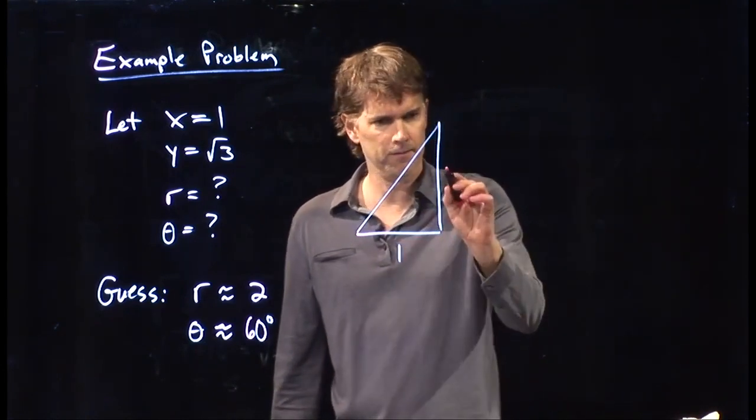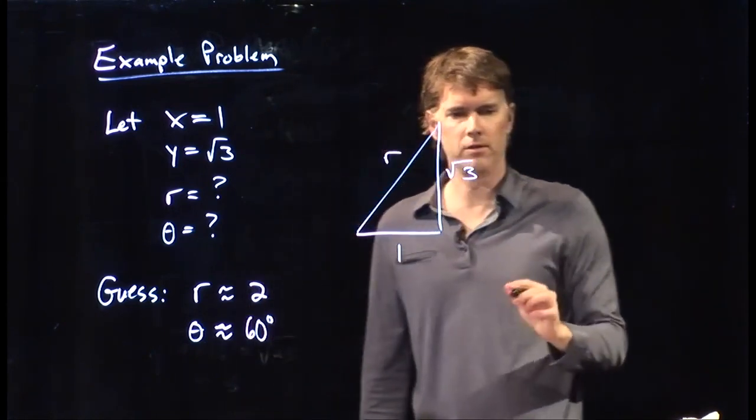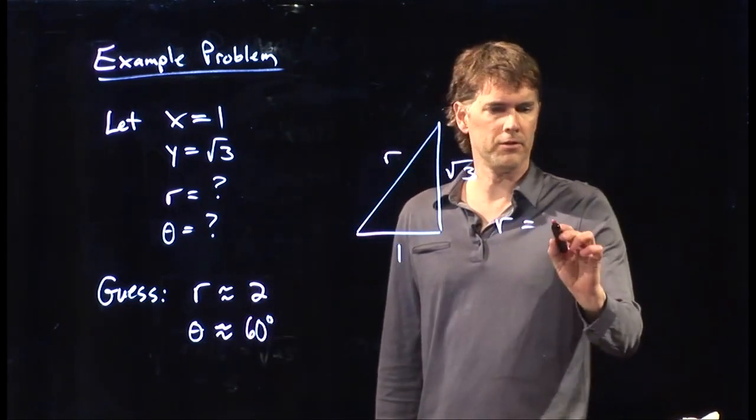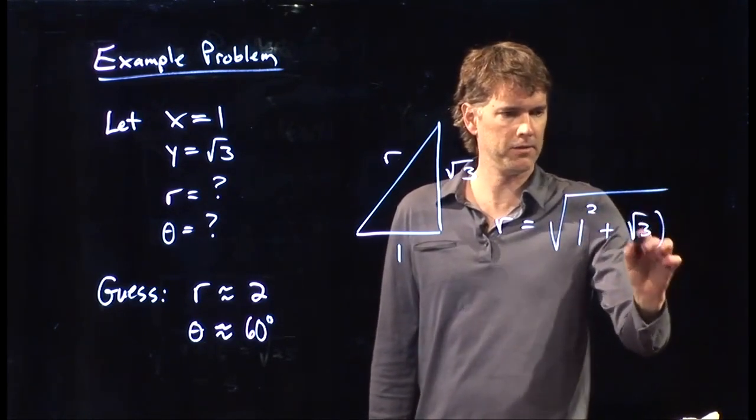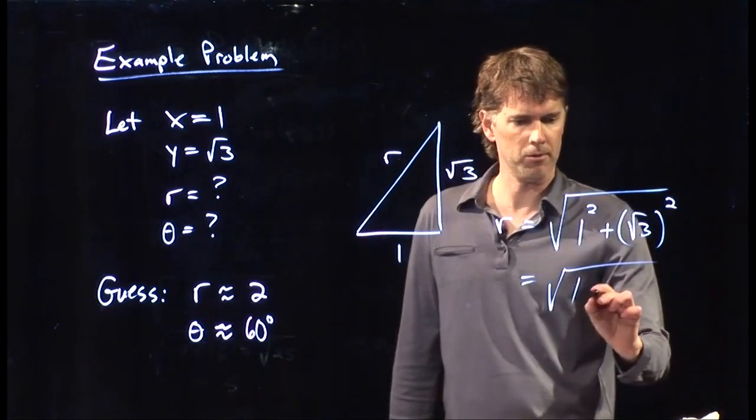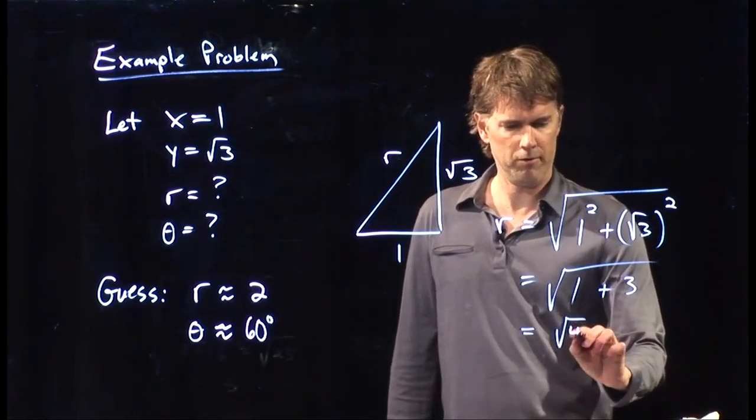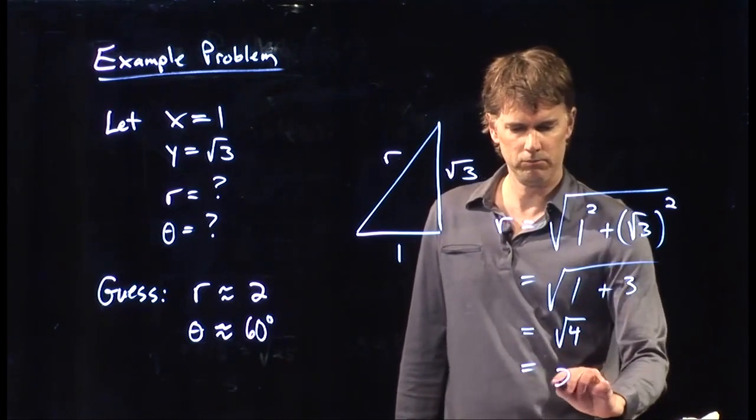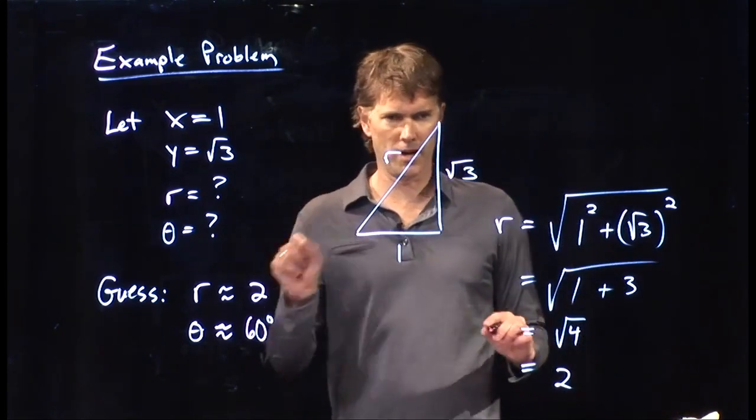So let's see if we can figure out what r is. r is of course just the square root of the x component squared plus the y component squared which is the square root of 1 plus 3 which is the square root of 4 which is 2. All right. Your guess was right on the money.